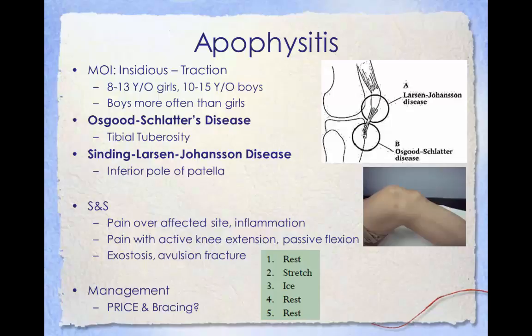To understand this, imagine a cable attached to a screw anchored in a plaster wall — if you continue to pull on the cable, it will crack the plaster at the attachment site and weaken the anchor point. This condition can occur with chronic repetitive tugging or with one specific event such as a blow, fall, or sudden jump. Osgood-Schlatter's disease is a traction injury that occurs when the patella tendon pulls away from the tibial tuberosity. Sinding-Larsen-Johansson disease is a traction injury that occurs when the patella ligament pulls on the inferior pole of the patella. Signs and symptoms include pain over the affected site, inflammation, pain with active knee extension and passive flexion, exostosis, or an avulsion fracture. Management includes PRICE and possibly bracing; if an avulsion fracture has occurred, surgical intervention may be necessary.